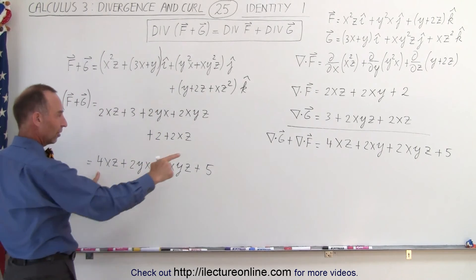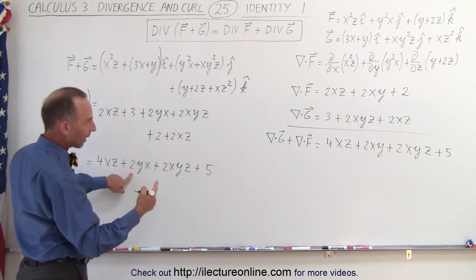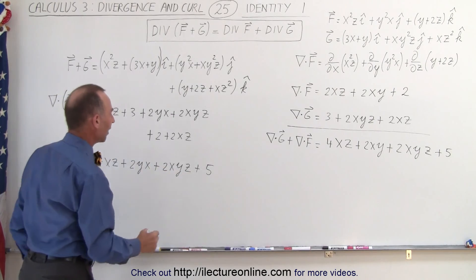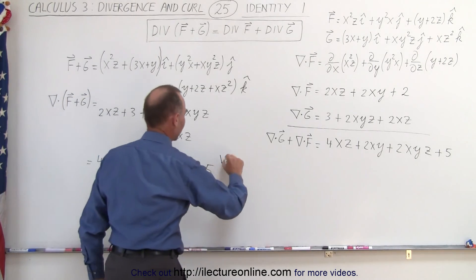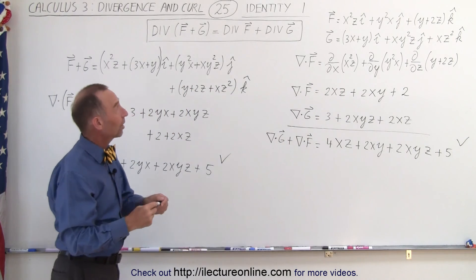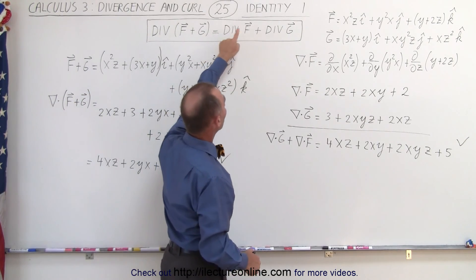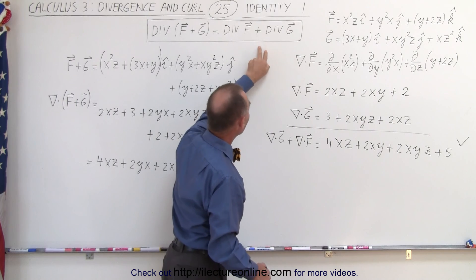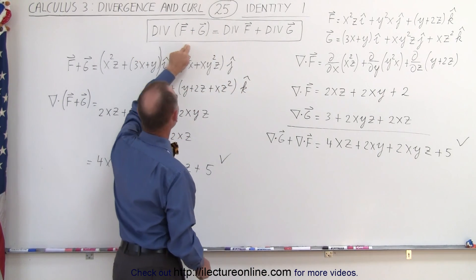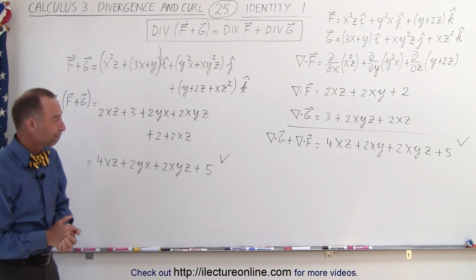Now compare this result. We have 4xz, we have 2yx — which is the same as 2xy — we have 2xyz, and plus 5. You can see that this equals this, which shows that we just illustrated that when we take the divergence of two vector fields first and add that together, it should be equal to the divergence of the two vector fields summed together. And you can see it does work — that's what we mean by that first identity.